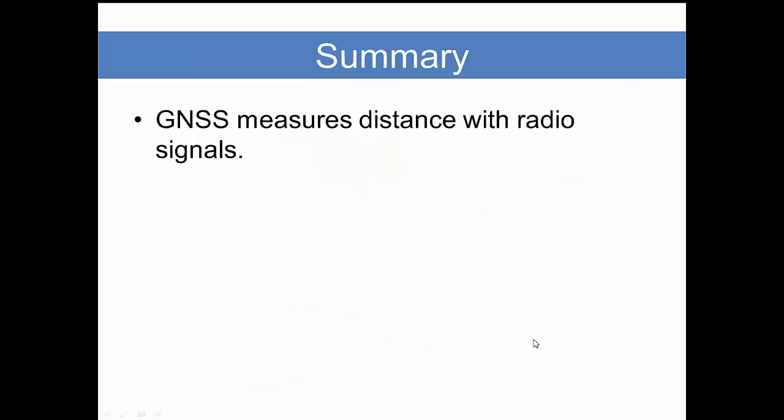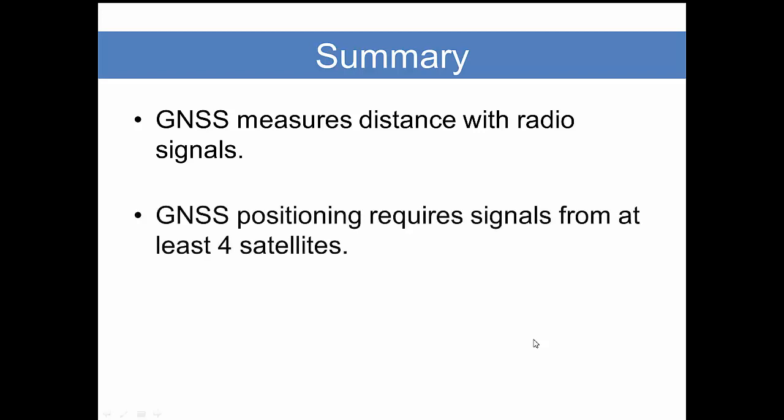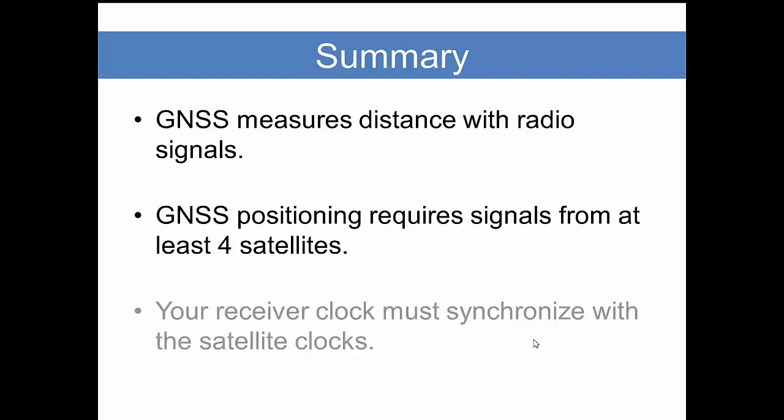GNSS measures distances using radio signals that travel at the speed of light. Our challenge is to time the travel. Second, GNSS positioning requires signals from at least four satellites. If we only had one satellite all we'd know is the distance away from the satellite. We're looking for the intersection of the distances from known points. And your receiver clock has to synchronize with the satellite clocks in order to measure the distance accurately.